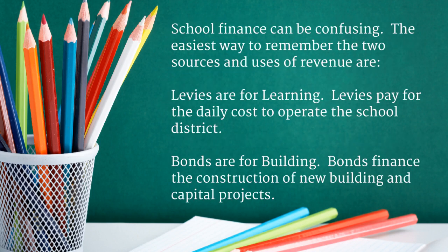School finance can be confusing. The easiest way to remember the two sources and uses of revenue are: levies are for learning — levies pay for the daily cost to operate the school district — and bonds are for building — bonds finance the construction of new buildings and capital projects.